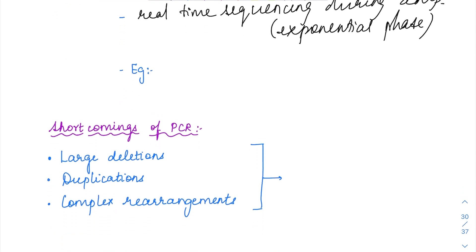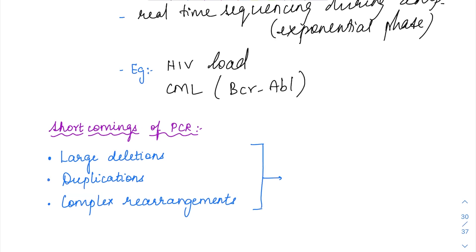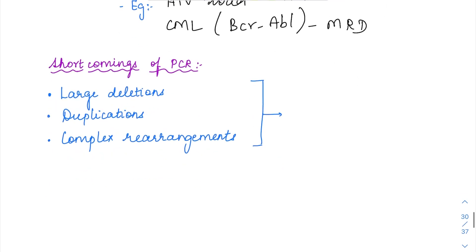So where do you use RT-PCR? RT-PCR is usually used for checking the viral load — so infections like HIV where you will have to check the viral load. And other than that, for CML, to identify the BCR-ABL fusion transcripts. Based on how much fusion protein is present, we can detect the minimal residual disease. So after treatment, to quantify the load of the fusion protein, you can use real-time PCR.